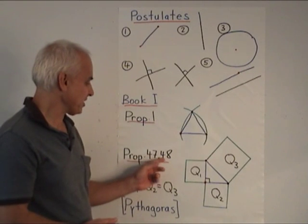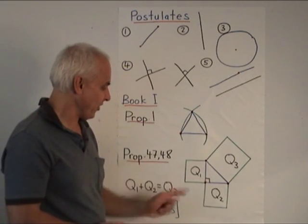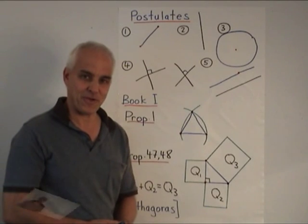And the other proposition, 48, is the converse, that if this relation holds, then there's a right triangle there.